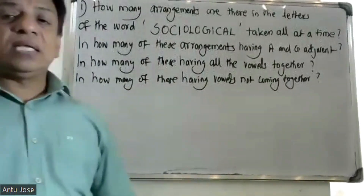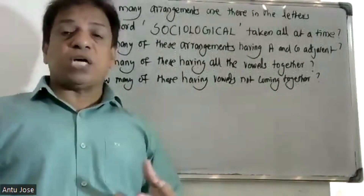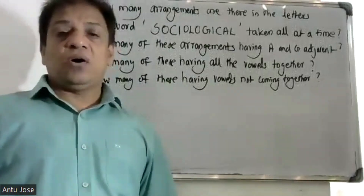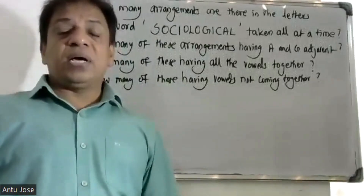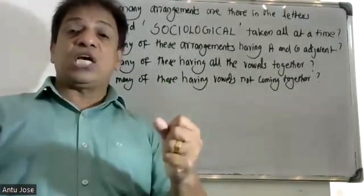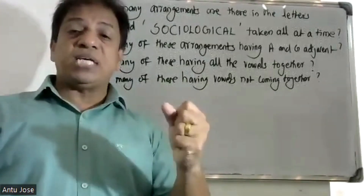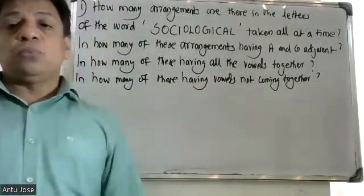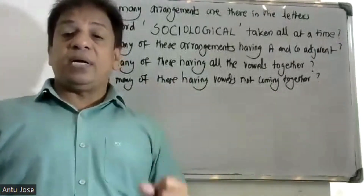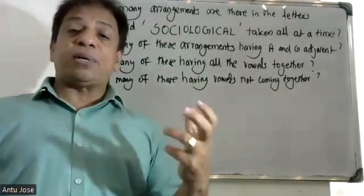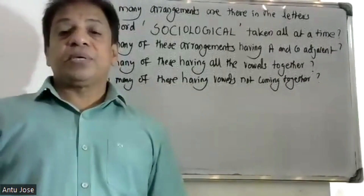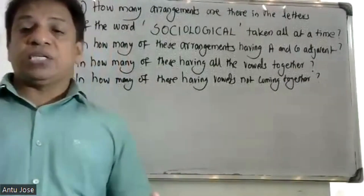In the class, we have different types of formulas. The formula for all at a time is N factorial. When letters R equal to N, it is N factorial divided by N minus R factorial. When letters repeat, it is N factorial divided by P1 factorial, P2 factorial, P3 factorial, etc. For circular arrangements, we use a different formula.